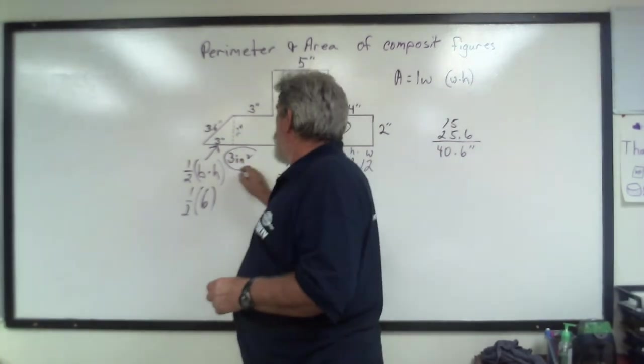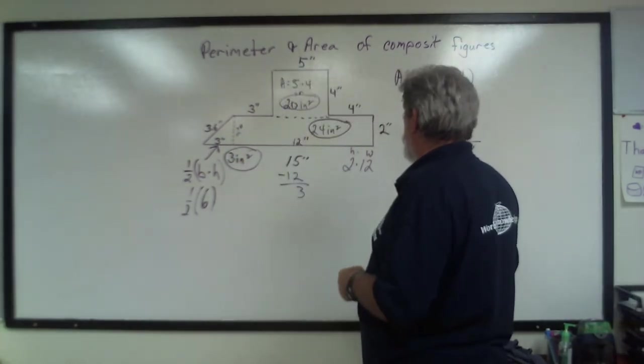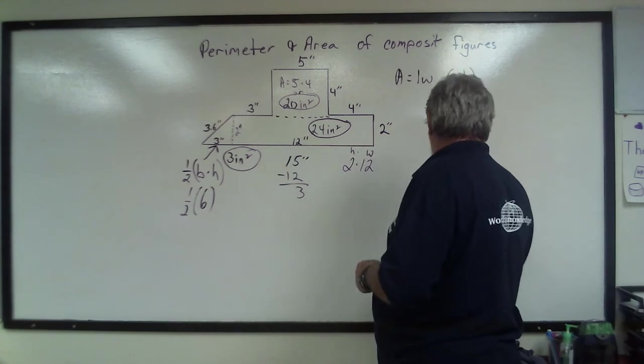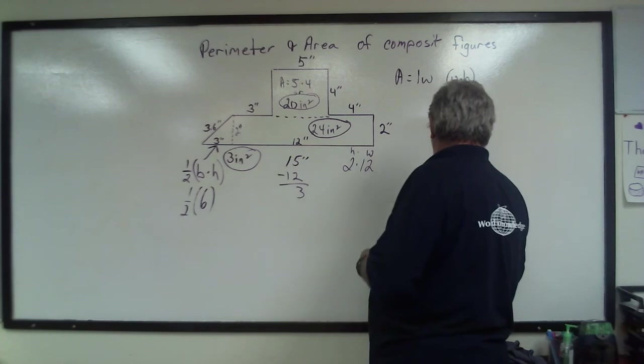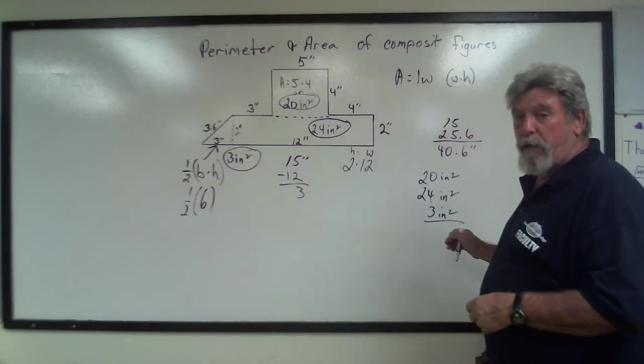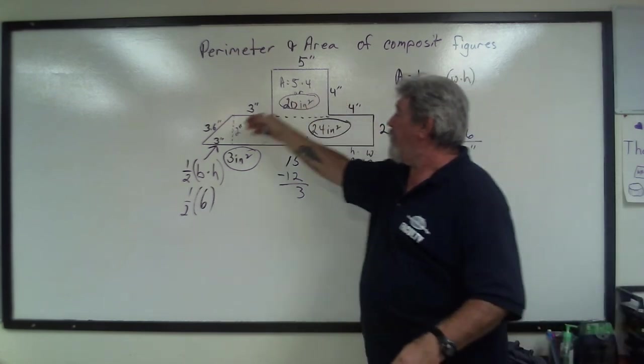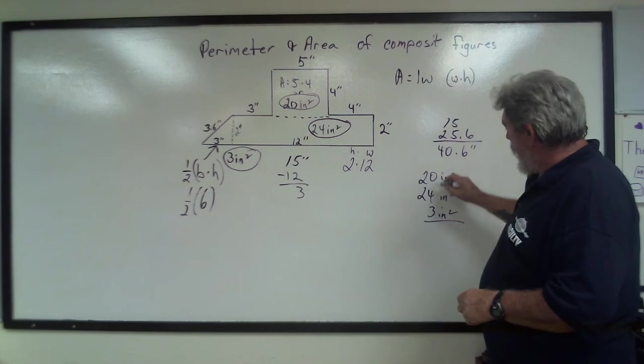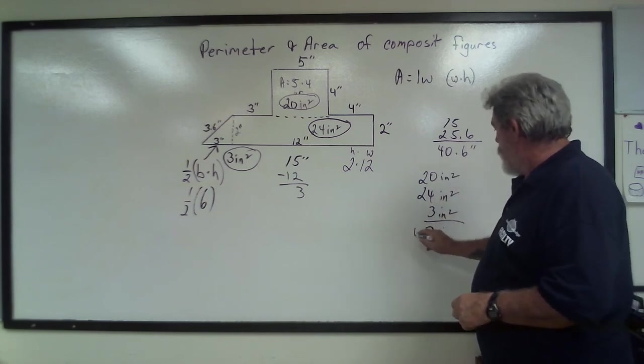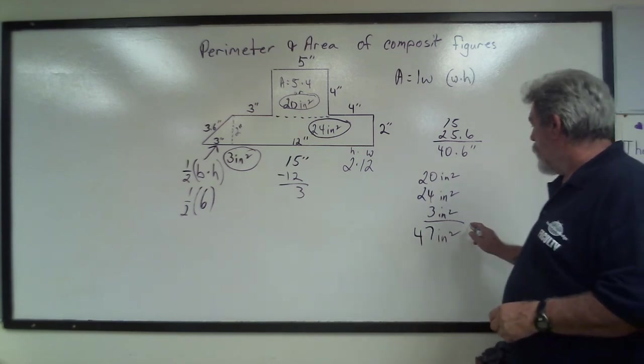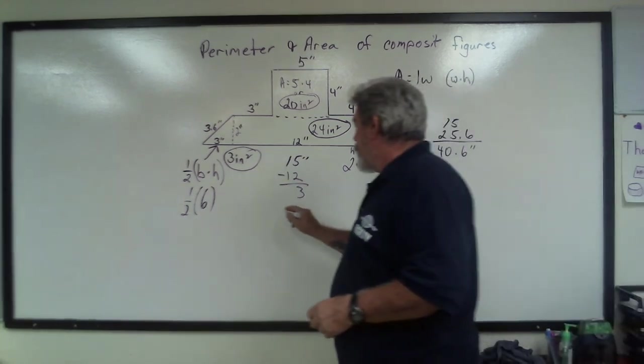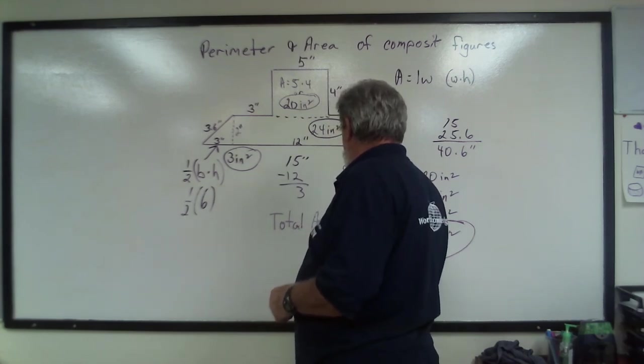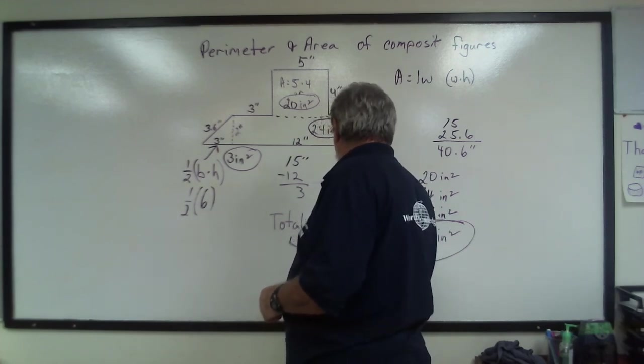Now, we want to know the area of the total composite figure. So we're going to take those numbers and add them together. We have 20 inches squared, 24 inches squared, and 3 inches squared. So we have all of our measurements. That's all three sections. And if you have to, cross them out as you write them down so you don't forget them. And we add it up, and we got 47 inches squared is our total area.